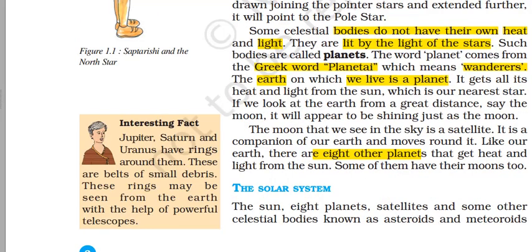Now that we have understood the stars, there are some celestial bodies which do not have their own light and heat — they are lit by the light of others. These are known as planets. The word planet comes from the Greek word 'planetai', which means wanderers. The Earth on which we live is a planet; it does not have its own heat and light.